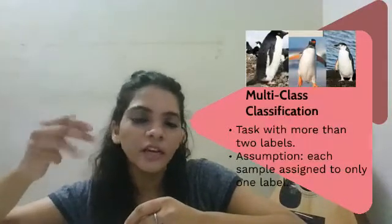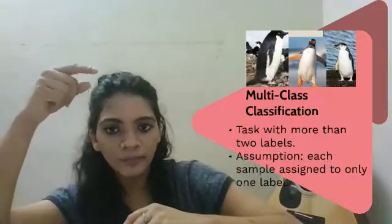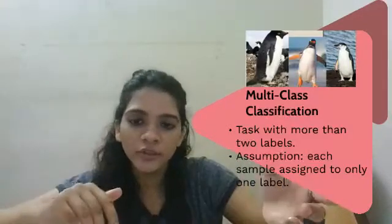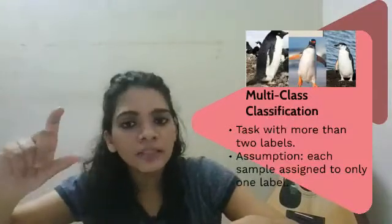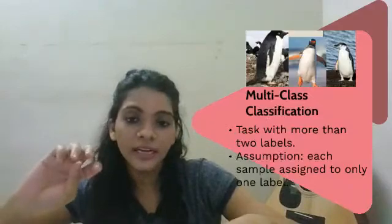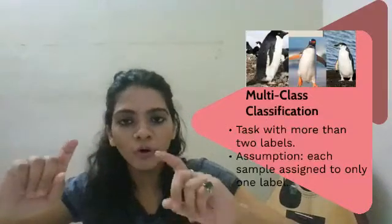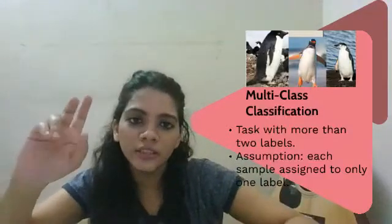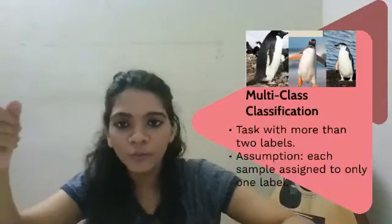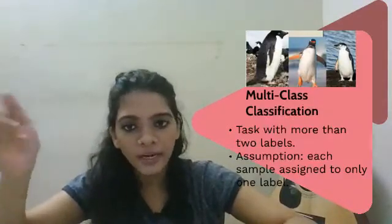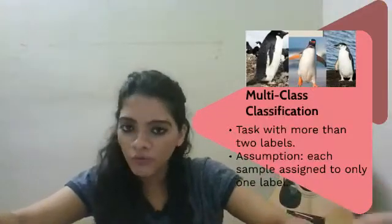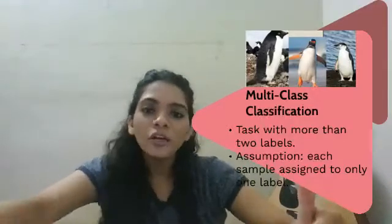The iris species are setosa, versicolor, and virginica. Similarly, in the penguin dataset, you classify three species: Adelie, Gentoo, and Chinstrap. The basic assumption of multi-class classification is that one example or one data point belongs to only one class — it cannot belong to more than one class. A penguin belongs either to Adelie, Gentoo, or Chinstrap, not more than one.